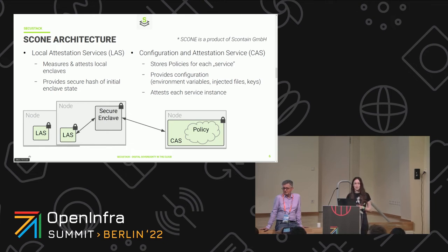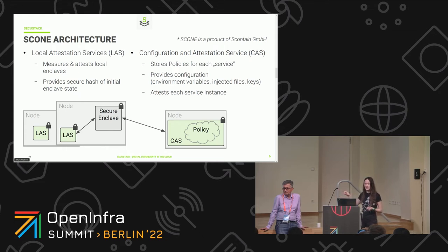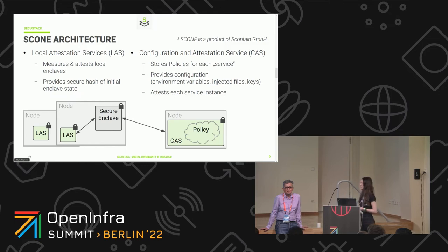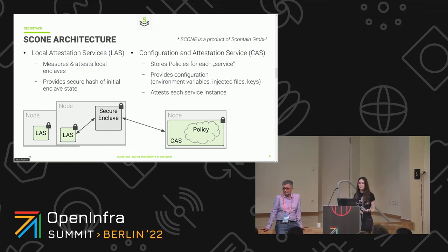SCONE consists of a Local Attestation Service (LAS) and a Configuration and Attestation Service (CAS), which is more central. On every node executing a secure enclave there must be an LAS. The CAS can be central or there can be more than one, stored on central nodes. The local attestation service measures and attests the local enclaves, providing a secure hash of the initial enclave state. The CAS is more complex — there we can store policies for each service like Barbican, and provide configuration like environment variables, injected files, and keys.